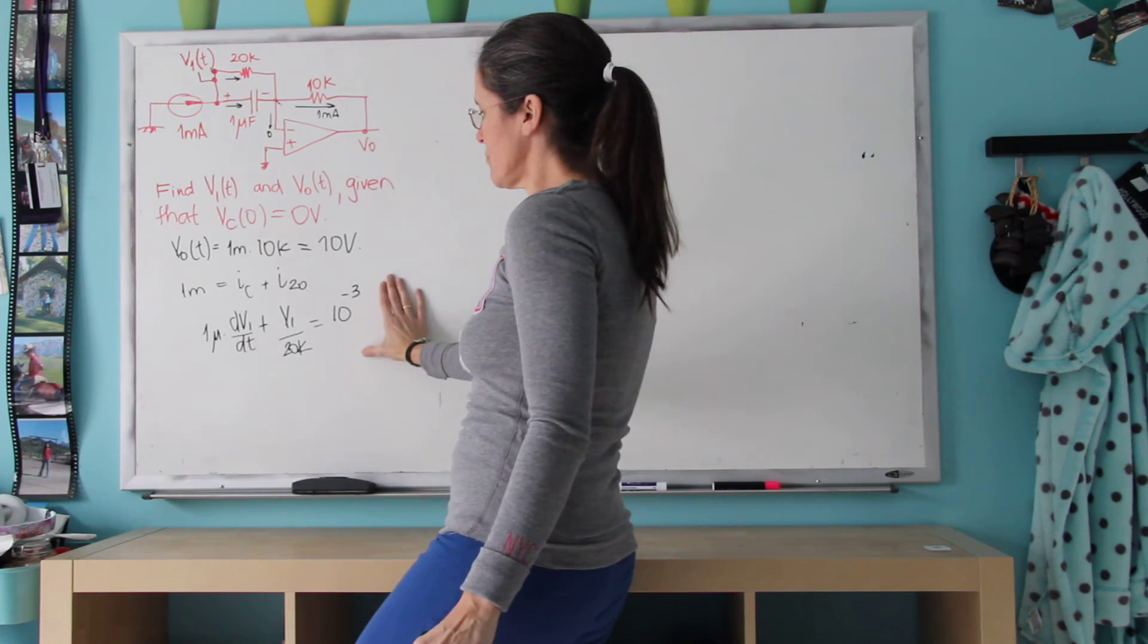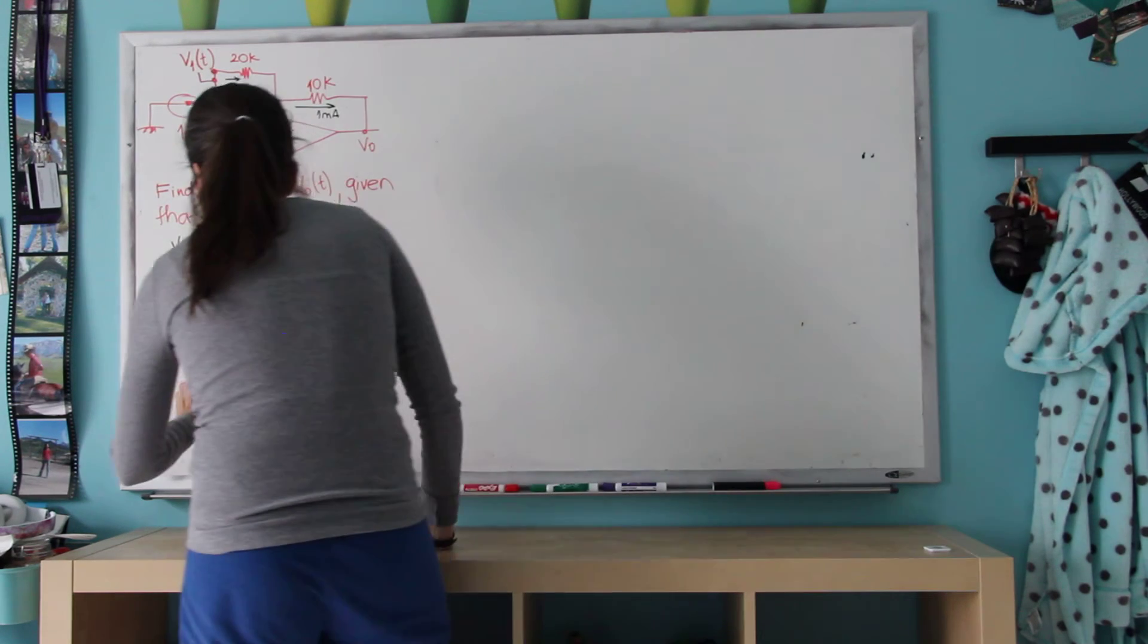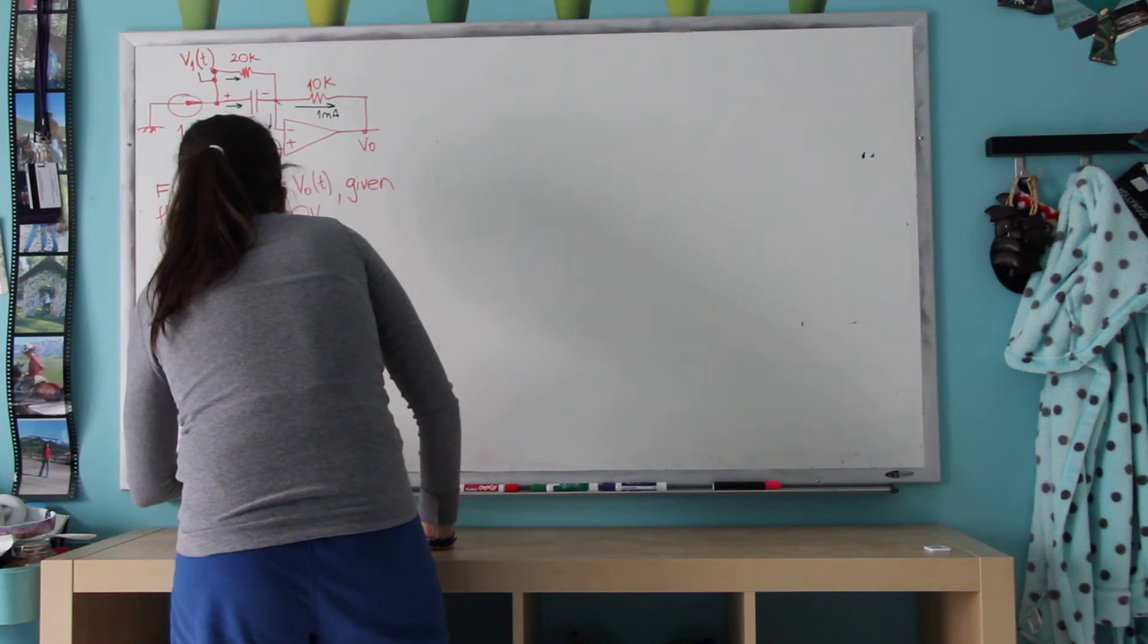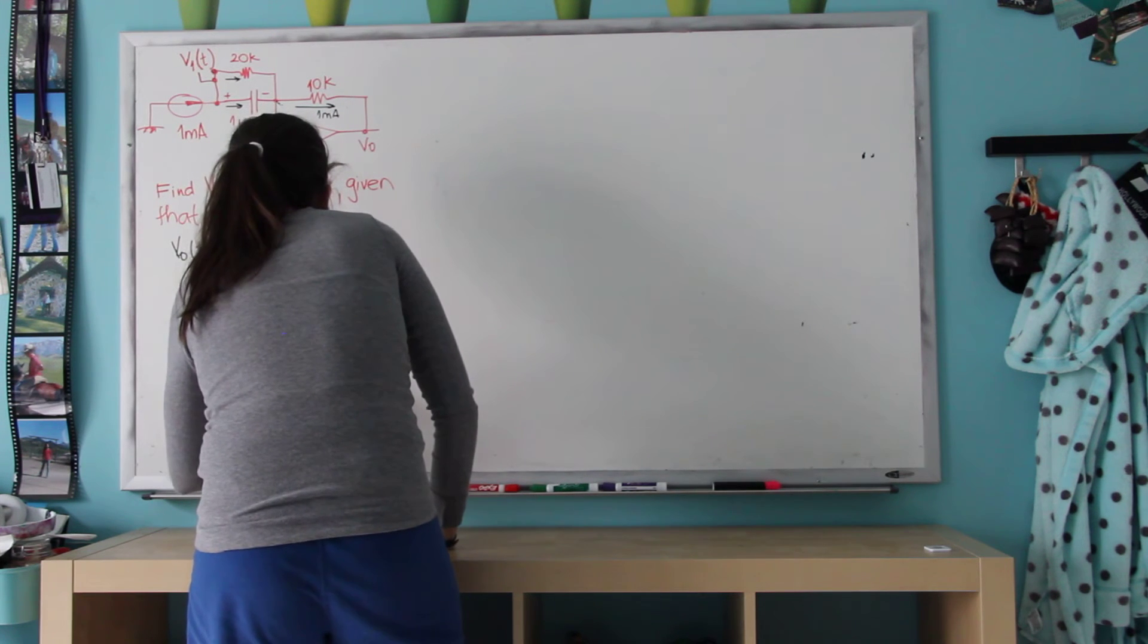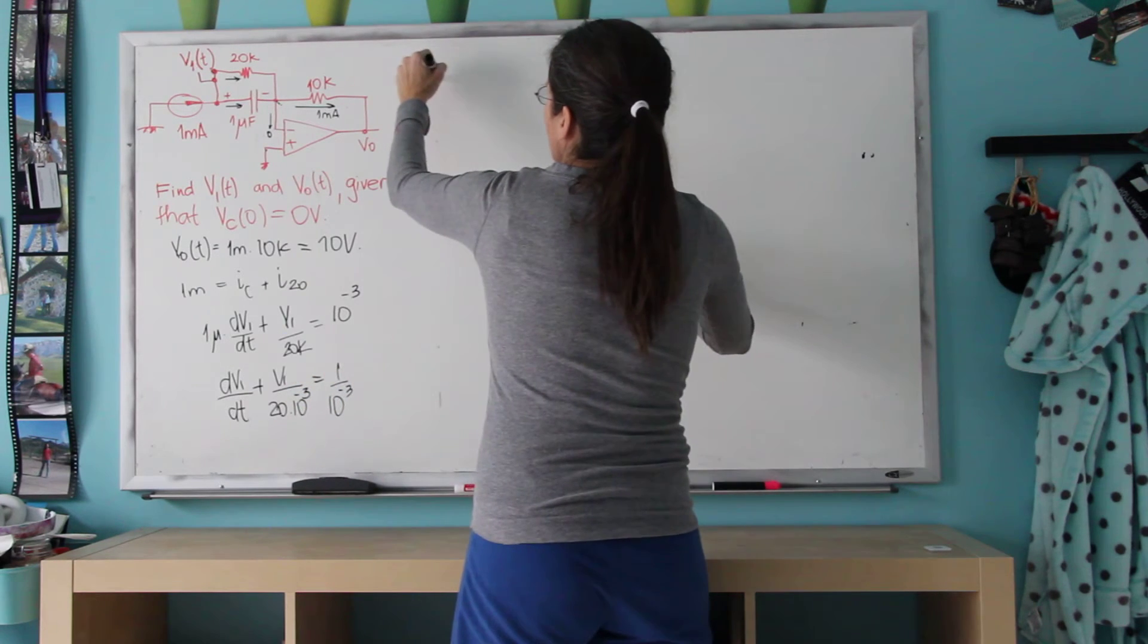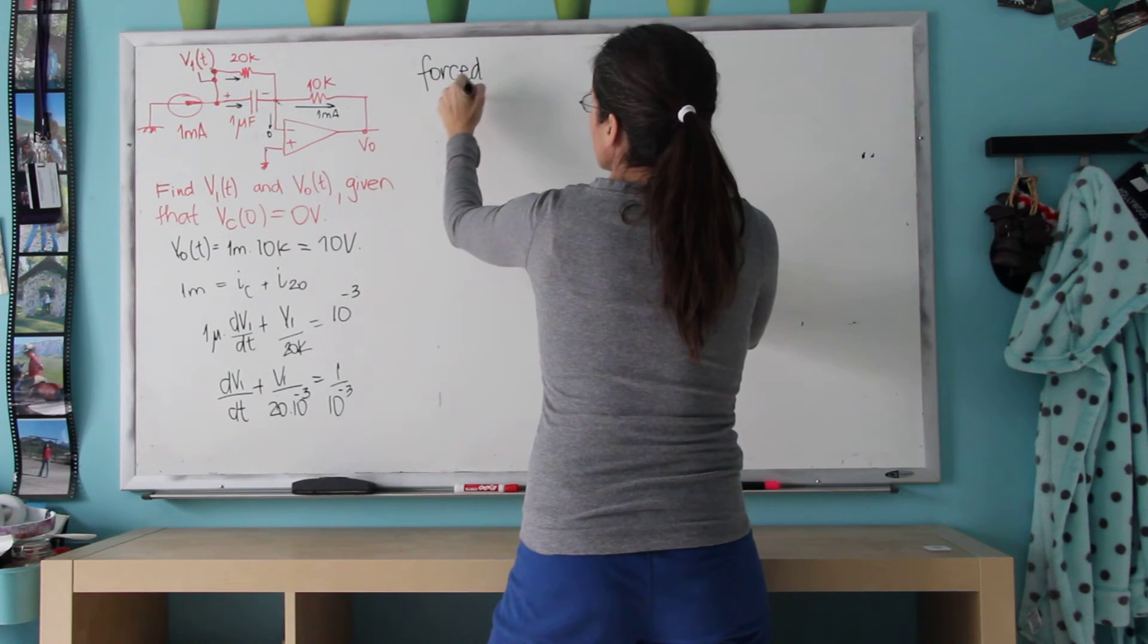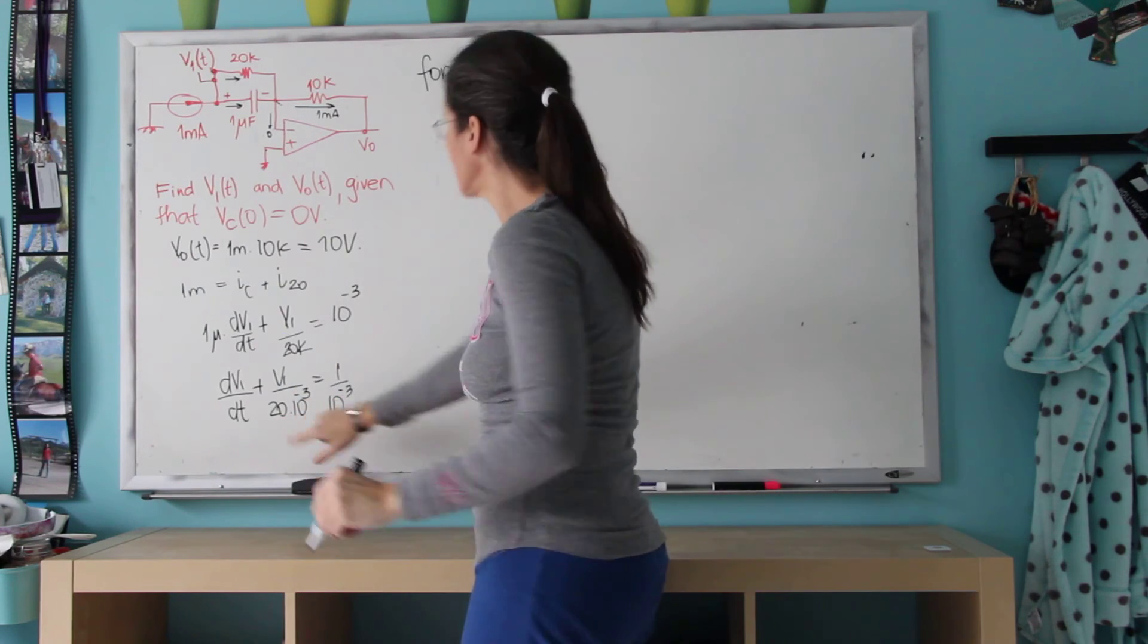And you can do two things here. Either find the forced response, and let me divide everybody by one millifarad. So as you see the forced response, which is the voltage across the capacitor for T 10 into infinity, is V1 equals 20. So when V1 equals 20, then we get this 0.